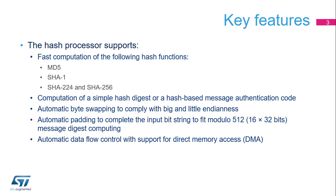The hash processor supports widely used hash functions, including Message Digest 5, or MD5, Secure Hash Algorithm, or SHA-1, and the more recent SHA-2, with its 224 and 256-bit digest-length versions. A hash can also be generated with a secret key to produce a message authentication code, or MAC. The processor supports bit, byte, and half-word swapping.